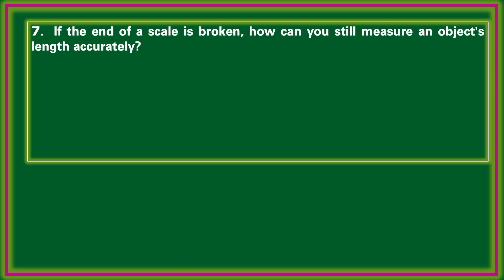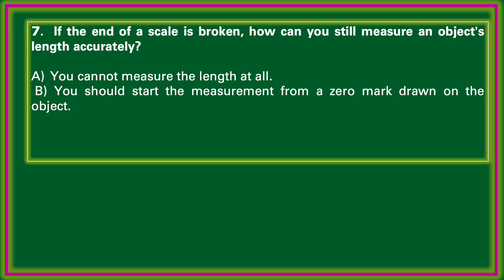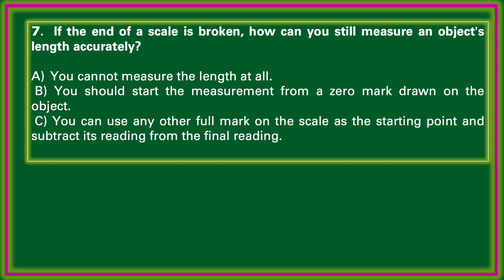If the end of a scale is broken, how can you still measure an object's length accurately? Options: you cannot measure the length at all; you should start from a zero mark drawn on the object; you can use any other full mark on the scale as the starting point and subtract its reading from the final reading; you should estimate the length by eye. The correct answer: use any other full mark as the starting point and subtract its reading from the final reading.